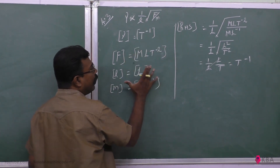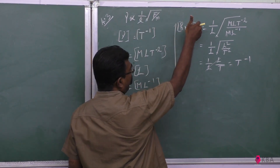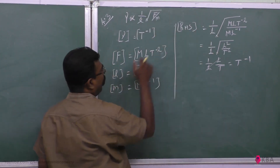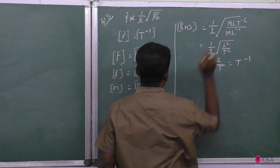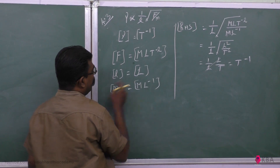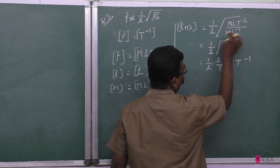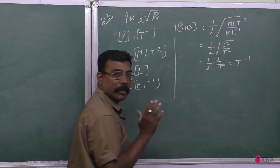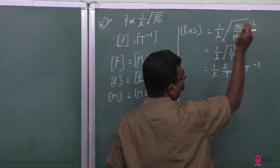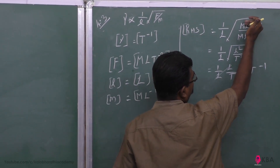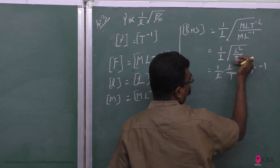So the RHS dimension is: (1/L) × √(F/M) = (1/L) × √(M·L·T⁻² divided by M·L⁻¹). Simplifying inside the root: M cancels, giving L²·T⁻². Taking the square root gives L·T⁻¹. Multiplying by the 1/L out front: L⁻¹ × L·T⁻¹ = T⁻¹. This matches the LHS, so the formula is dimensionally consistent.